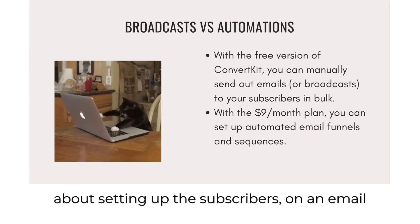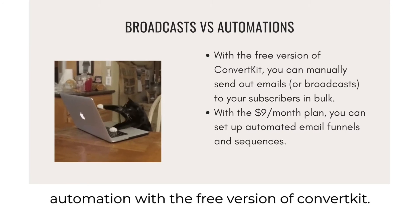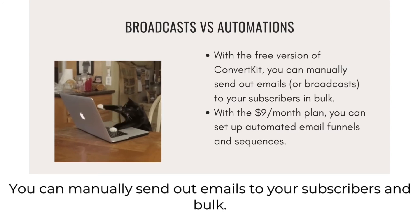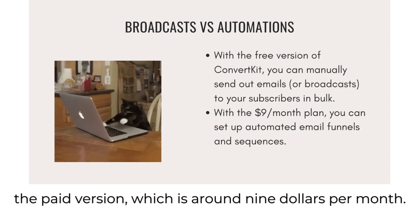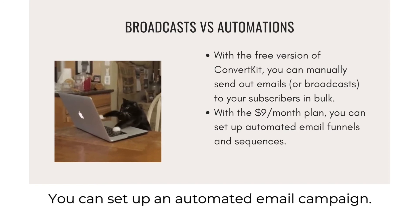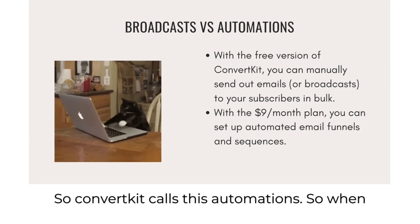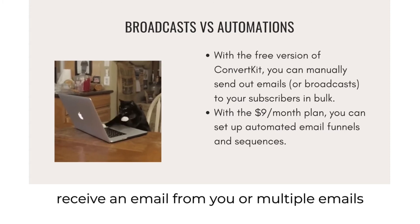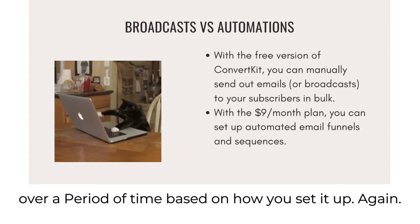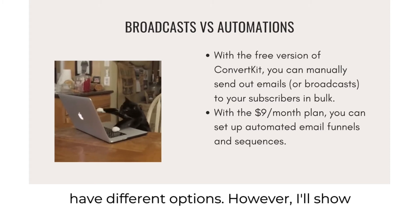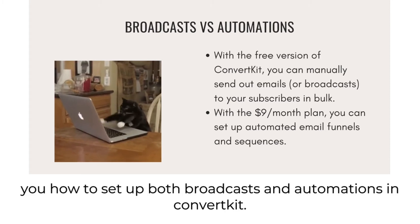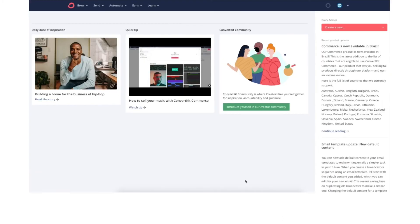Now let's talk about setting up subscribers on an email automation. With the free version of ConvertKit, you can manually send out emails to your subscribers in bulk — ConvertKit calls this broadcasts. With the paid version, around nine dollars per month, you can set up an automated email campaign — ConvertKit calls these automations. When someone subscribes to your list, they'll automatically receive one or multiple emails over a period of time based on how you set it up.